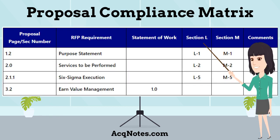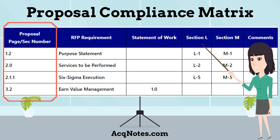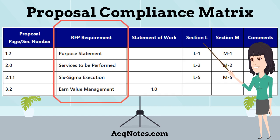Here is a basic example of a Proposal Compliance Matrix. There are normally four sections in a Proposal Compliance Matrix. Section 1 shows the page location within the proposal where a particular requirement is addressed. Section 2 provides details on what the actual requirement states, normally the exact wording found in the statement of work or request for proposal.